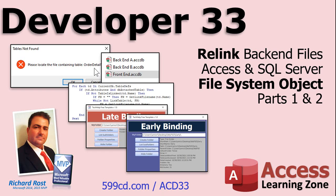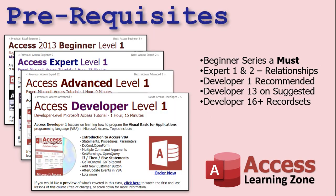Then we will start working with the File System Object, getting back into our file I/O lessons. This will be parts one and two of that. This is the 33rd level of my developer courses. I recommend you have taken all my beginner, expert, and other developer courses, and I'm going to add Developer 30 and 31 for the other file I/O lessons, where we talk about basic VB file I/O. It's good to know that stuff before you get into the File System Object stuff, which is a little more advanced.